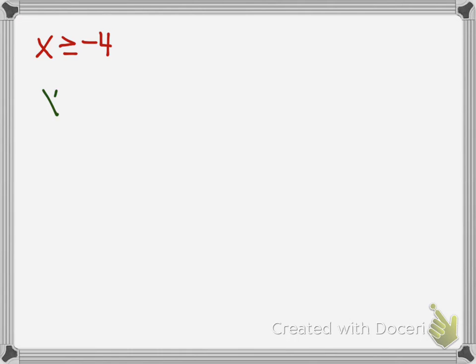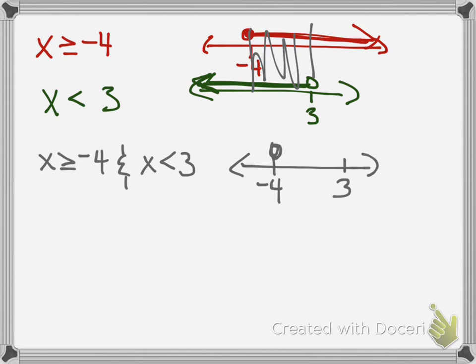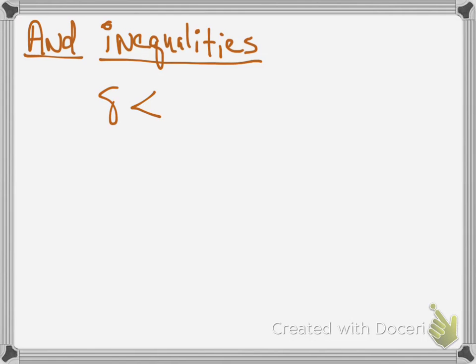Here's some examples of joining. X greater than or equal to negative four and X less than three. Here's a graph of X greater than or equal to negative four, then one of less than three, and the joining is where they intersect in that little area. Notice how it's in between those two. Now, that's not how most 'and's are going to look. Most 'and' inequalities look like something in between two things.